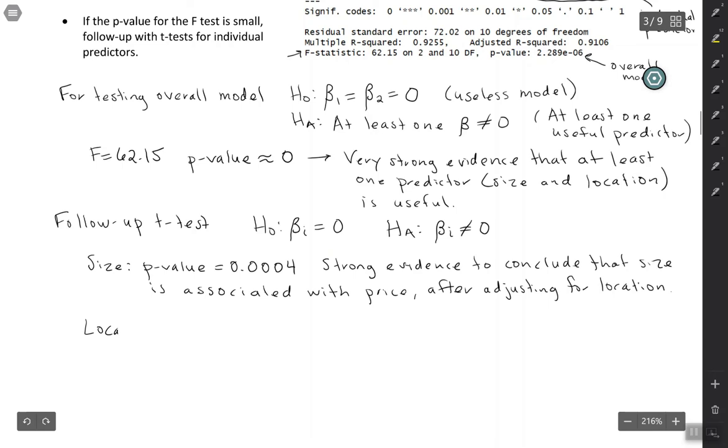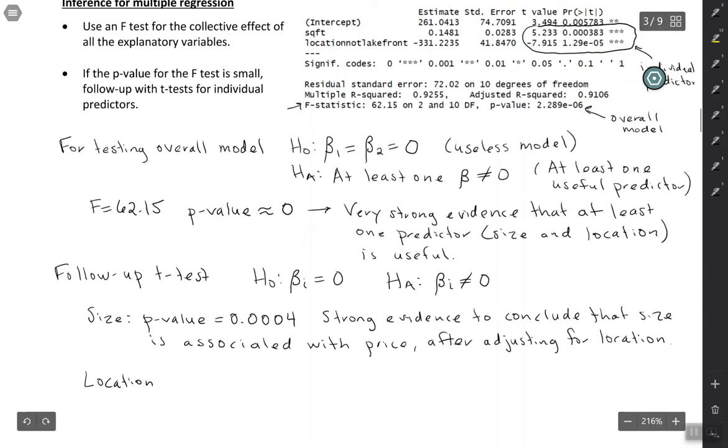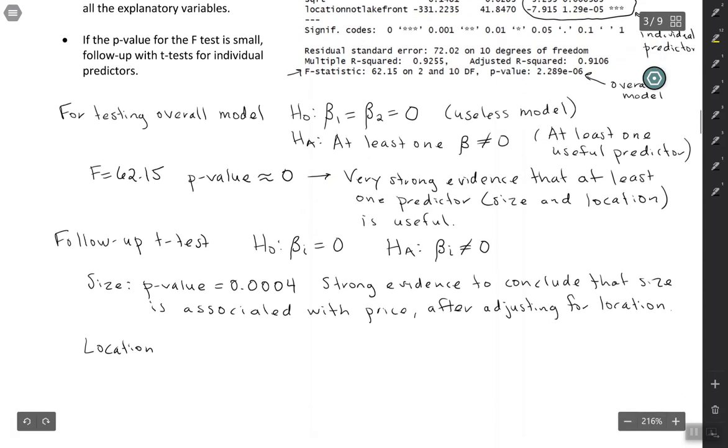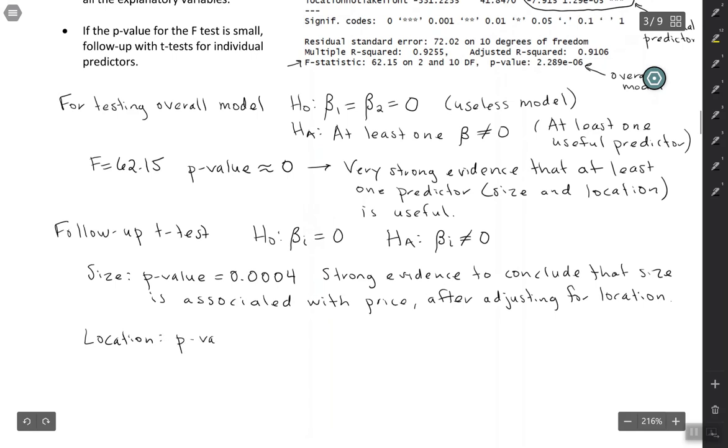So now let's do it for location just to be thorough. Location is an even smaller p-value. I'm going to be lazy and not do the scientific notation, essentially 0. So again, we have strong evidence to conclude. This time we're talking about location. Strong evidence to conclude that location is associated with price. And because it's multiple regression, we have to remember to say, after adjusting for size.